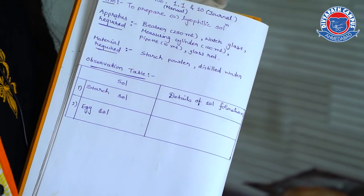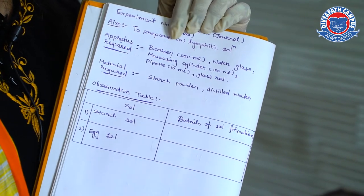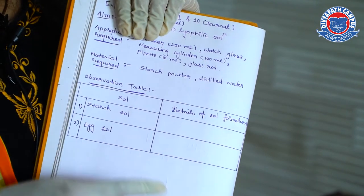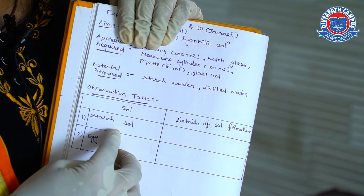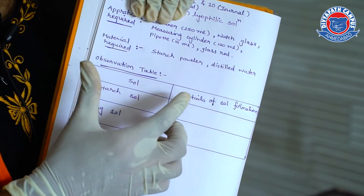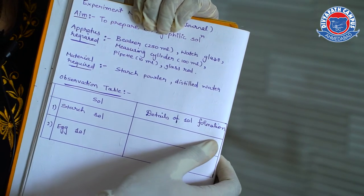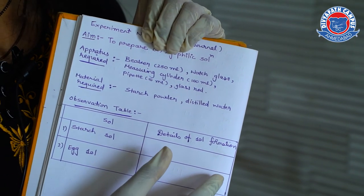In our printed journal, the experiment number is 10, to prepare a lyophilic sol. This is the A part to prepare a lyophilic sol. In this, you can prepare two types of sols, starch sol and egg sol. Here, we prepared only starch sol. So, in the observation table, you have to just write detail of the sol formation. Means, sol is formed or sol is not formed. So, here we will write sol is formed.